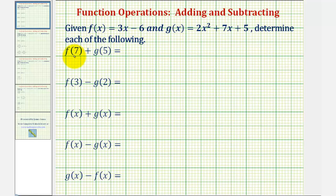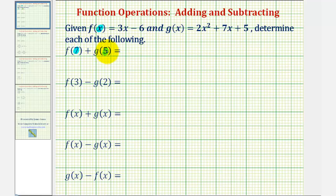We first have f of 7 plus g of 5. To evaluate f of 7, we want to determine the output of function f when the input is 7, so we'll substitute 7 for x in function f. And then for g of 5, we want to determine the output of function g when the input is 5, so we'll substitute 5 for x in function g.